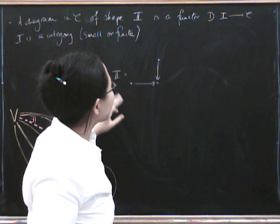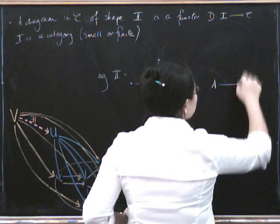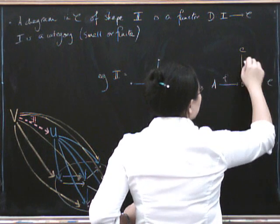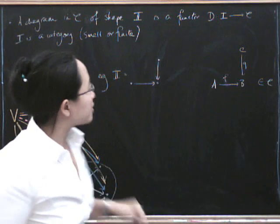And so technically what we're doing is whenever we draw a diagram like this in a category C, what we've really done is we've identified a functor from I to C.